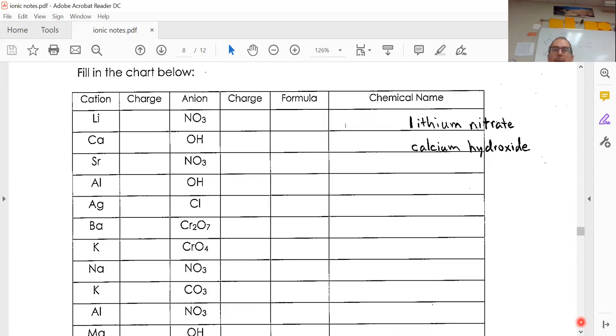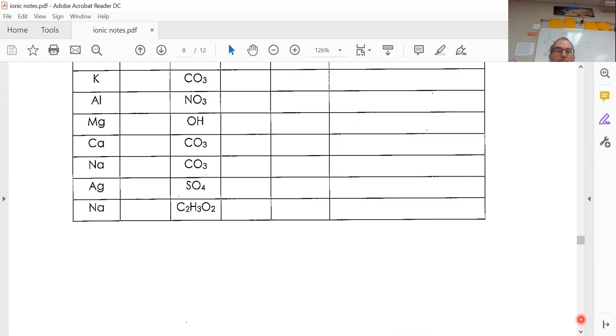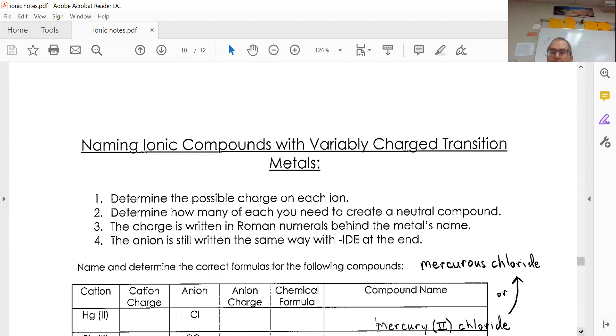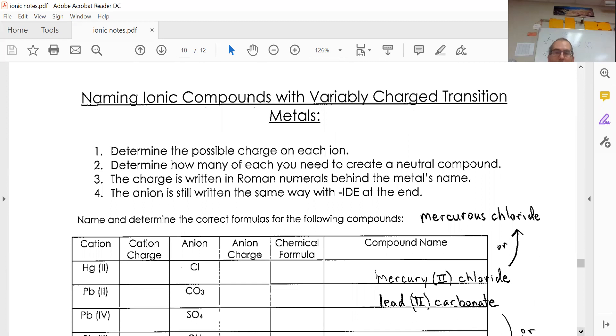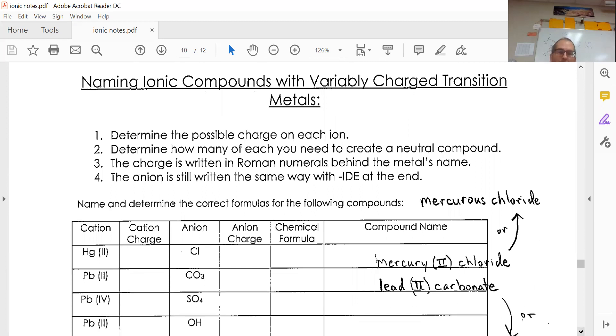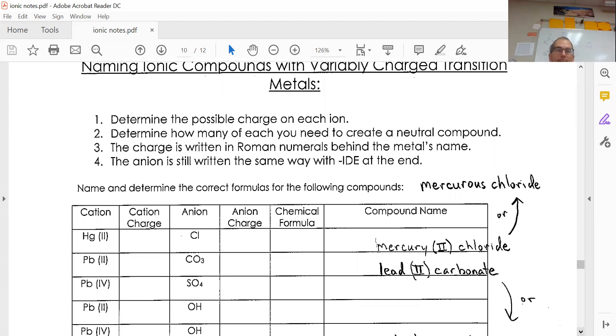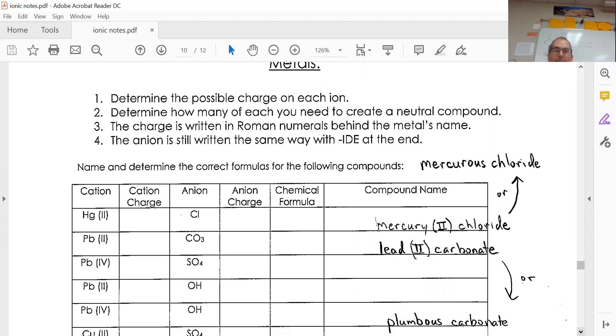Naming ionic compounds with variably charged transition metals—it's just metals that could have more than one possible charge and we just need to identify that. Anytime you see a roman numeral, and this is a roman numeral two, that's going to be the charge. It's always a positive charge and this is typically with metals.